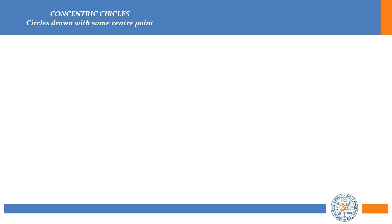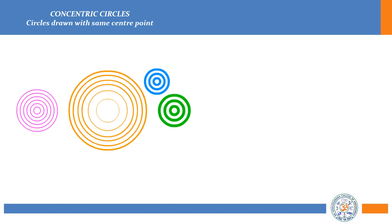These are the concentric circles. A concentric circle has the same center — a single center point is used to draw a number of circles. With different radii or diameters, we can draw different circles, all sharing the same center. So these are all concentric circles.